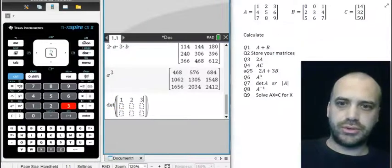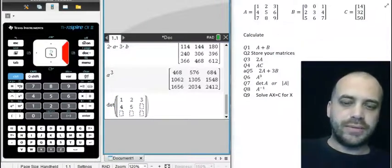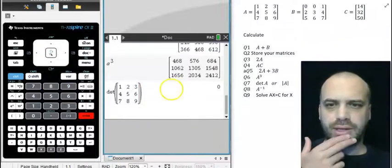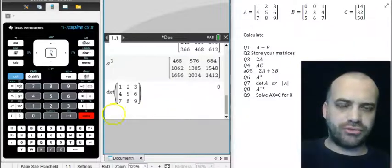One, two, three. I'm showing you how to do this, because you don't always store your matrices if you're only going to use one once. And so there's the determinant of matrix A.